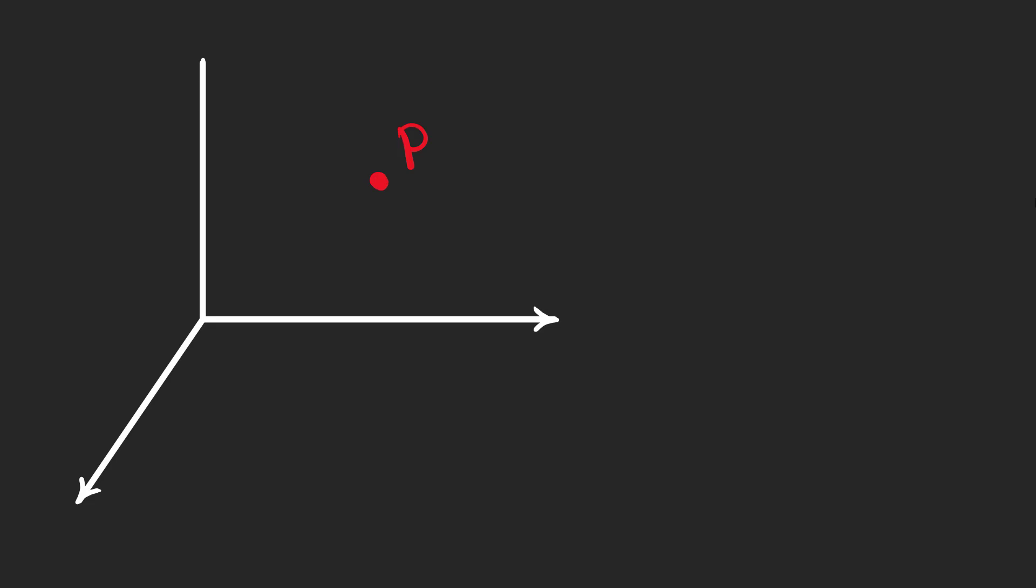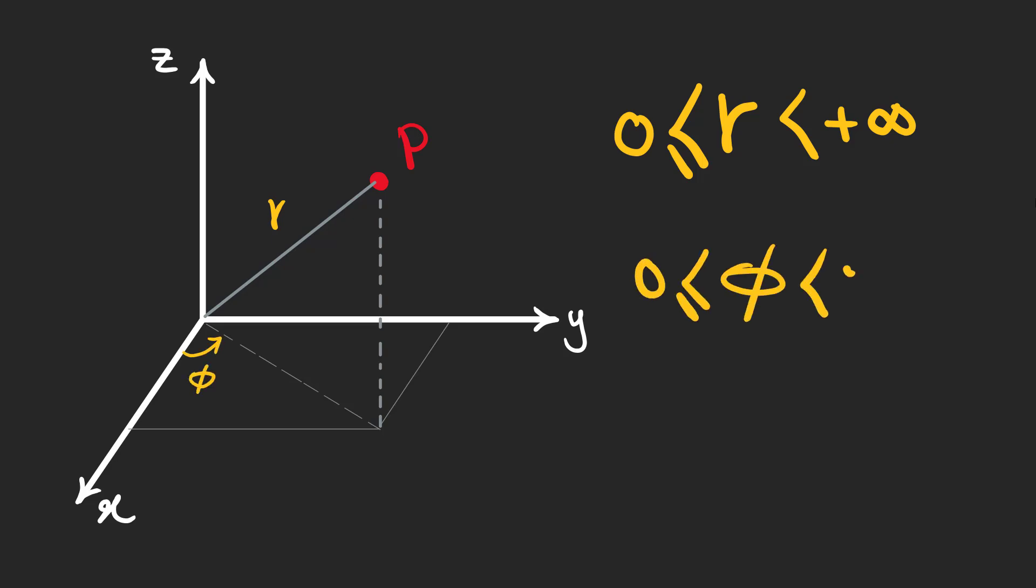Now let's consider the same point and define three parameters of a spherical coordinate system. The first parameter is r, which is the distance from the origin to the desired point. The second parameter is phi and is the angle between the x-axis and the shadow or image of r on the x-y plane. And finally, theta is the angle of the z-axis with the line connecting the origin to the point p.